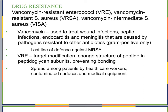Another concern is VRE — vancomycin-resistant enterococci. We also have vancomycin-resistant Staph aureus (VRSA) and vancomycin-intermediate Staph aureus (VISA). Vancomycin is used to treat wound infections, septic infections, endocarditis, and meningitis caused by pathogens resistant to other antibiotics — gram-positive organisms. After methicillin became insufficient for Staph aureus infections, vancomycin became our very last line of defense against MRSA. Now we're encountering vancomycin-resistant Staph aureus — yet another problem.